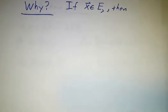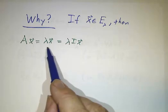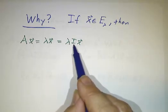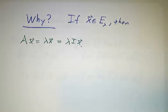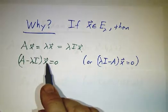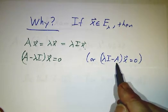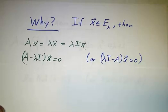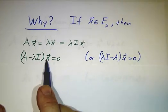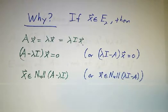So let's see why. Suppose we have something that's in the eigenspace. That means that Ax equals λx. And of course, λx is the same thing as λ times the identity matrix times x. But that means that A minus λ times the identity times x equals 0. Or if you prefer, you can say λ times the identity minus Ax equals 0.